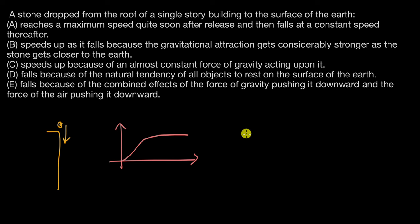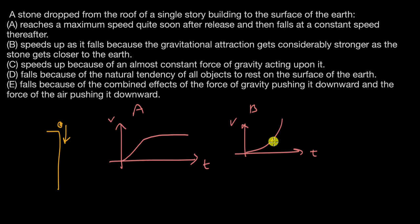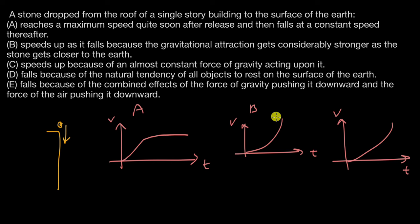The second option says it speeds up as it falls because the gravitational attraction gets considerably stronger as the stone gets closer to the earth. On a velocity-time graph, the second option shows increasing speed. The key difference between B and C is that B says the force increases, while C says the force is constant, and because of that constant force the speed is increasing.